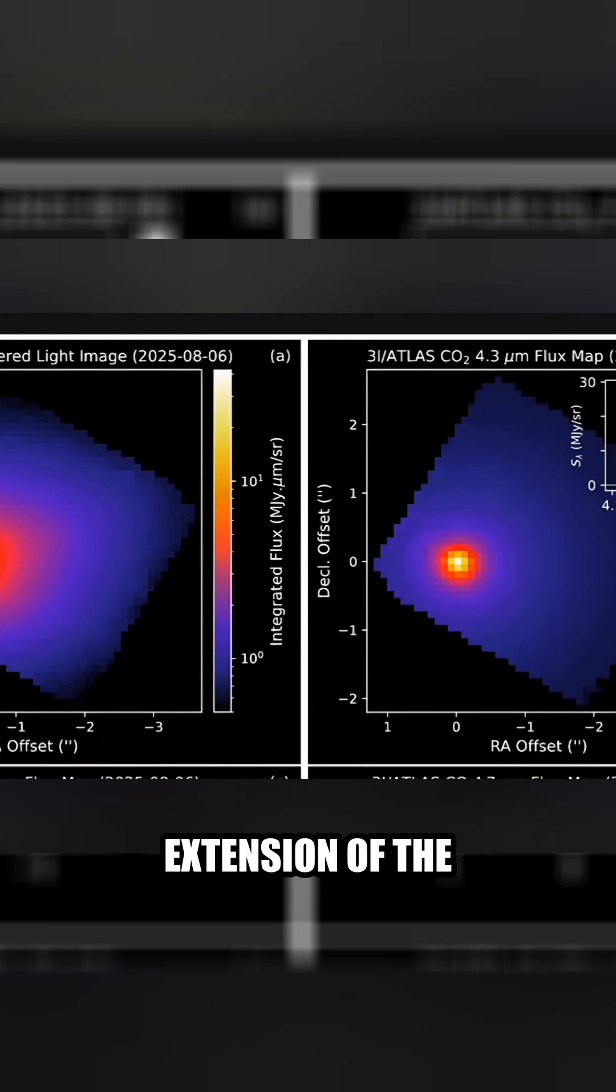The sunward extension of the glow around 3I Atlas is opposite in direction to the tail of scattered sunlight that is commonly observed for comets.